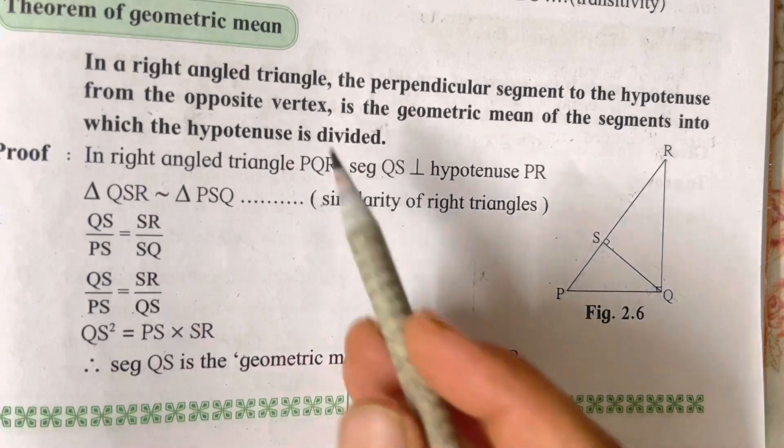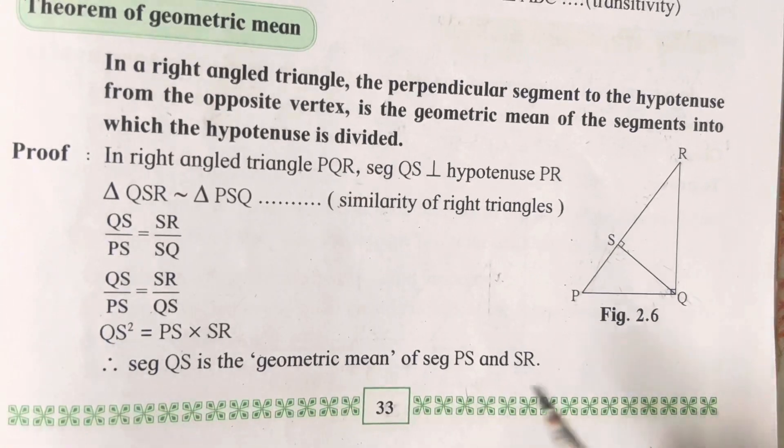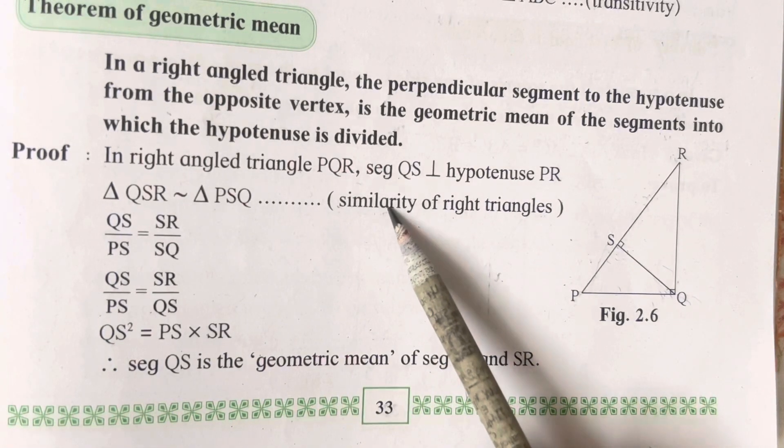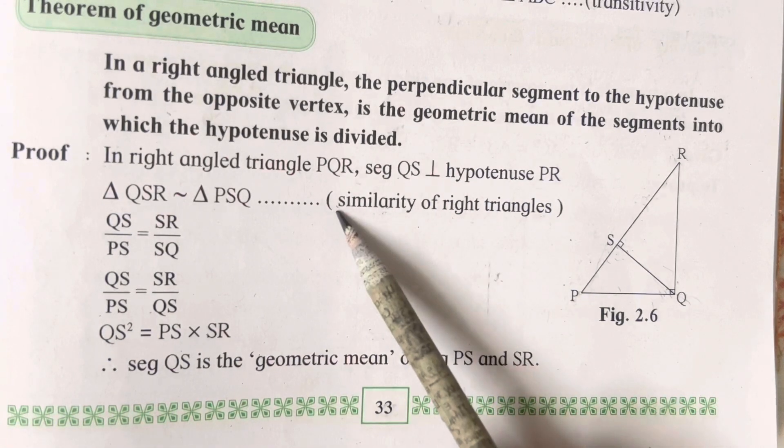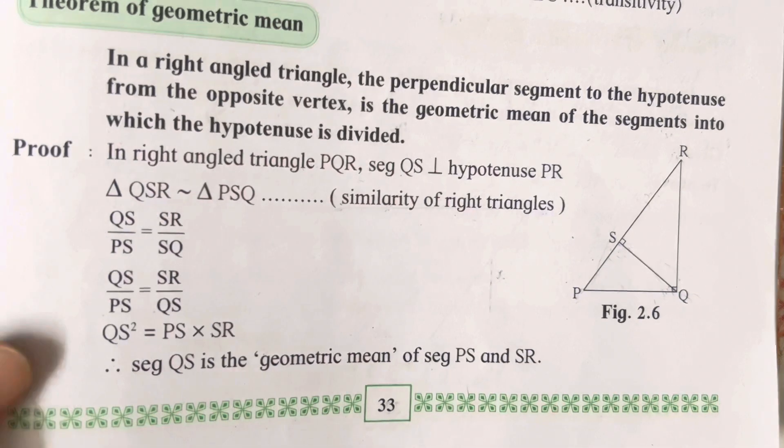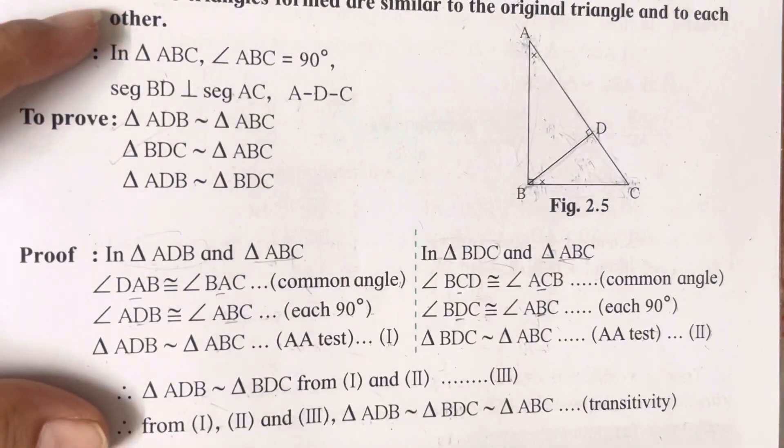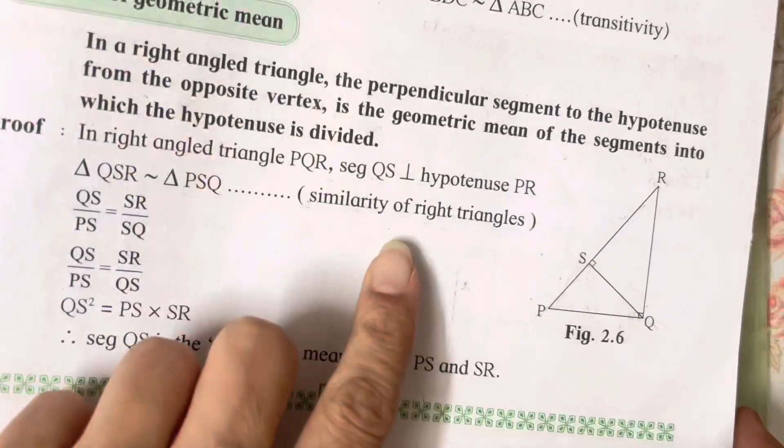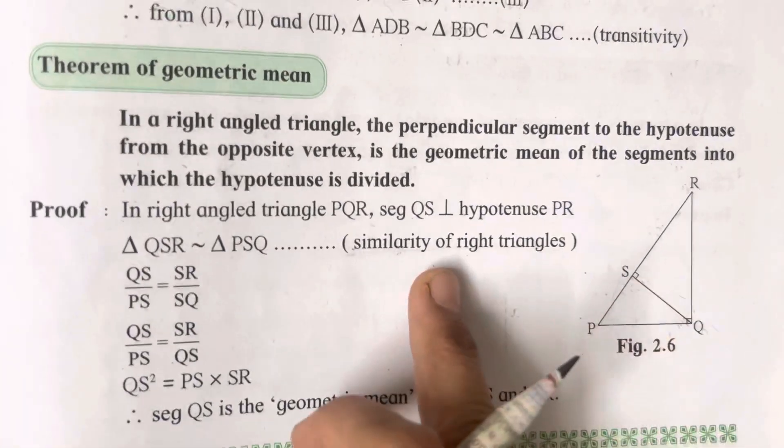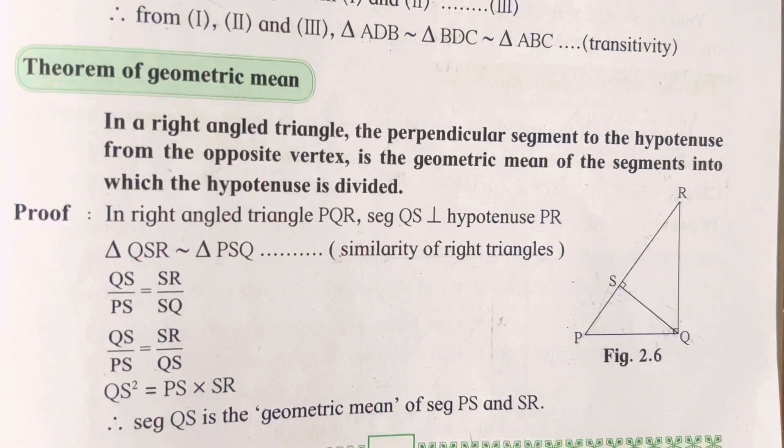The same thing you all have to directly mention: that theorem we have already done. The link has been given in the description box; you can watch it so it will be easy for you all to understand why we have directly wrote the statement 'similarity of right-angled triangle.' This procedure will be saved if you're writing it this way.